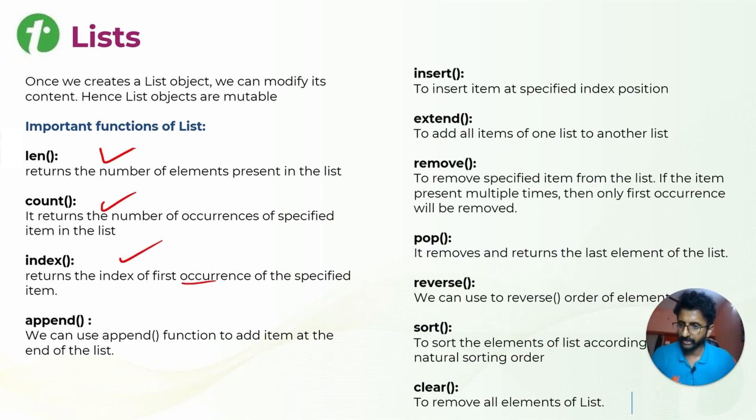One is the length function that we have already seen in strings. There is a count function that we have also seen. Then there is index which will tell the first occurrence of the item. There is append - append will be able to add the item at the end of the list.